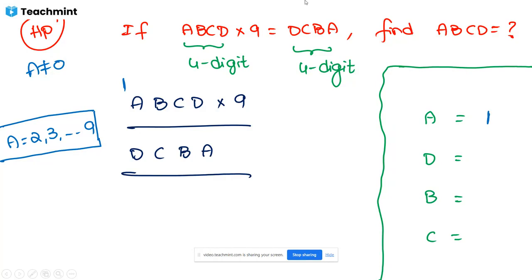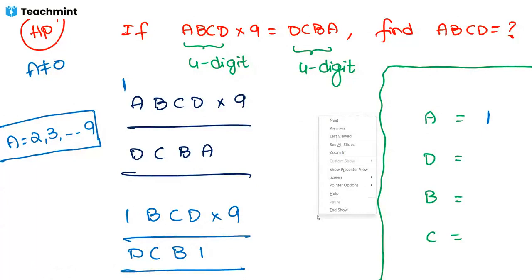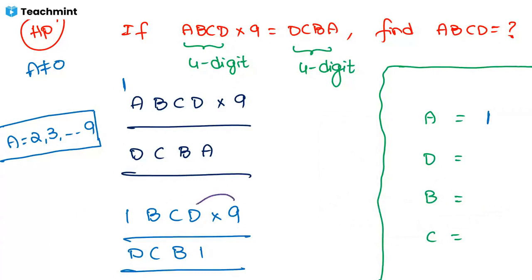Step one: A = 1. Next, once A is found, substitute and calculate D. Nine multiplied by D must end with one (since the result's last digit is A = 1). Nine times nine equals eighty-one — ending with one. So D = 9. Nine times two ends with eight, nine times three ends with seven — only nine times nine ends with one.